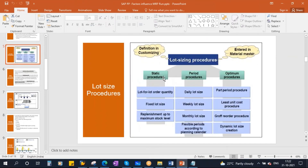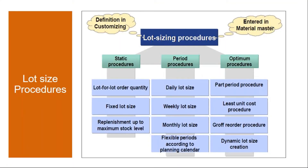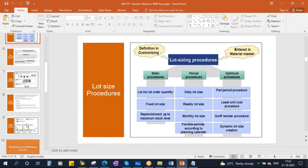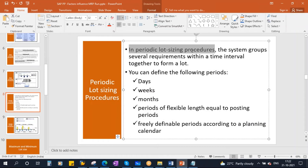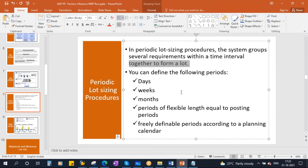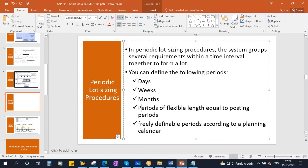These are the static lot sizing procedures. We discussed lot for lot order quantity and fixed lot size. Now we will go to the periodic lot sizing. In periodic lot sizing procedures, the system groups several requirements within a time interval together to form a lot. You can define the following periods: days, weeks, months, and a period of flexible length according to your requirement.